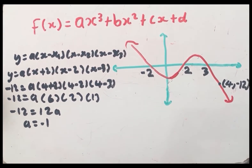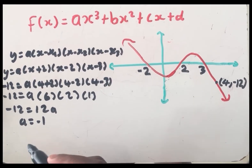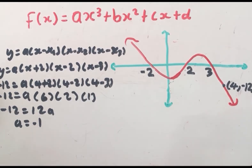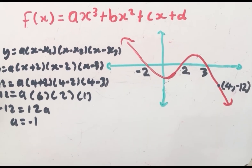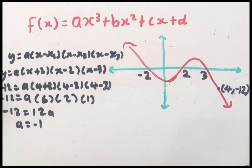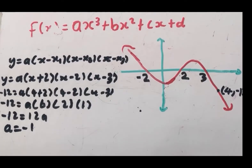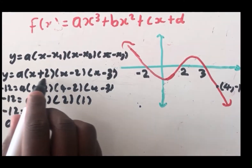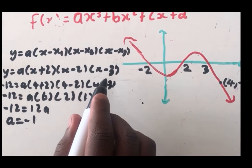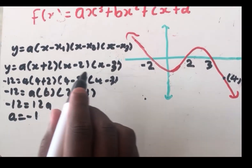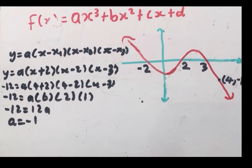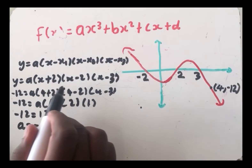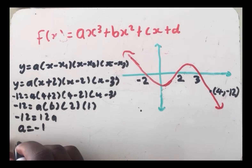How do we find b and c? We have to go back to the step where we substitute the x-intercepts. We have to make sure that the only unknowns are x and y. So we go back to that step and substitute a = −1, so that only x and y are unknown.